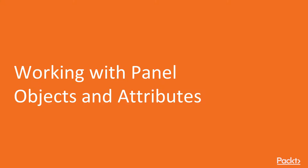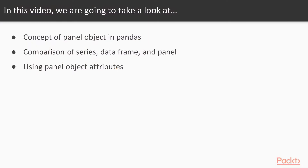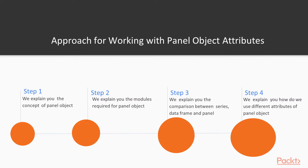This video is on working with panel object attributes. In this video, we are going to take a look at the concept of panel object in pandas, comparison of series, data frame, and panel, and how do we use panel object attributes. The approach involves four steps: Step 1, we explain the concept of panel object. Step 2, we explain the modules required for panel object. Step 3, we explain the comparison between series, data frame, and panel. Step 4, we explain how to use different attributes of panel object.